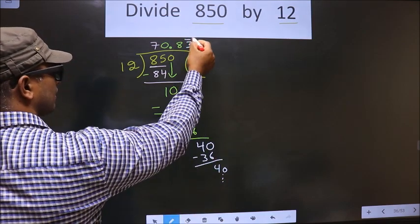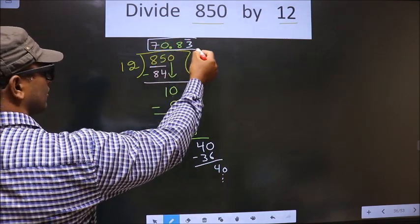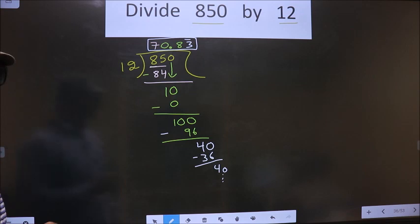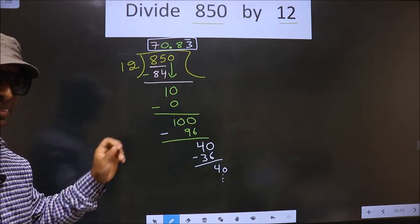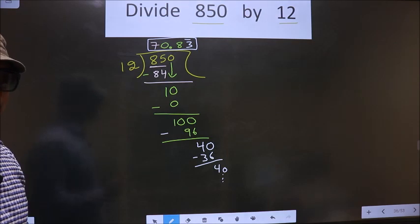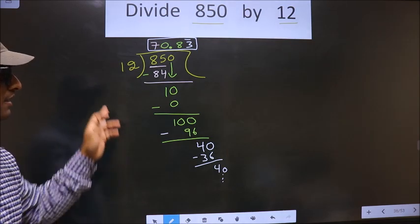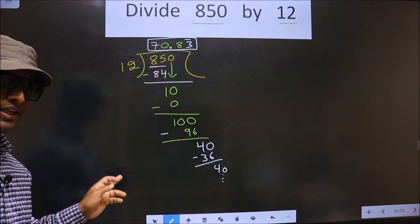So this is our quotient. Did you understand where the mistake happens? You should not do that mistake. Am I clear?